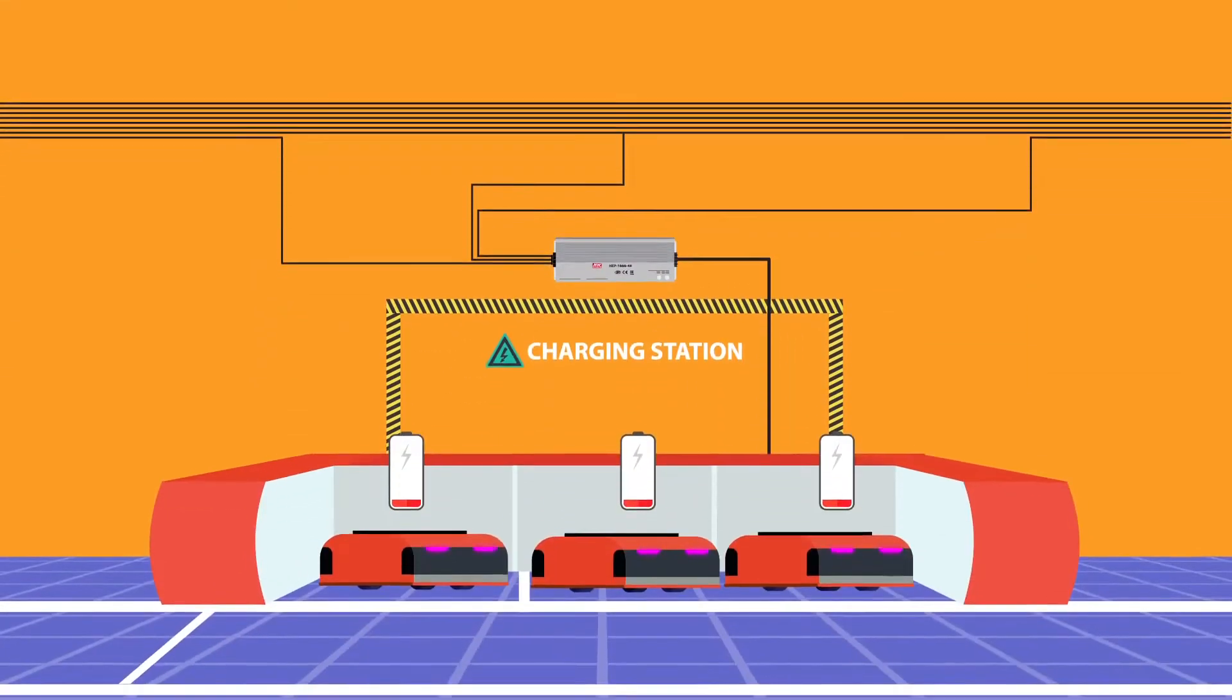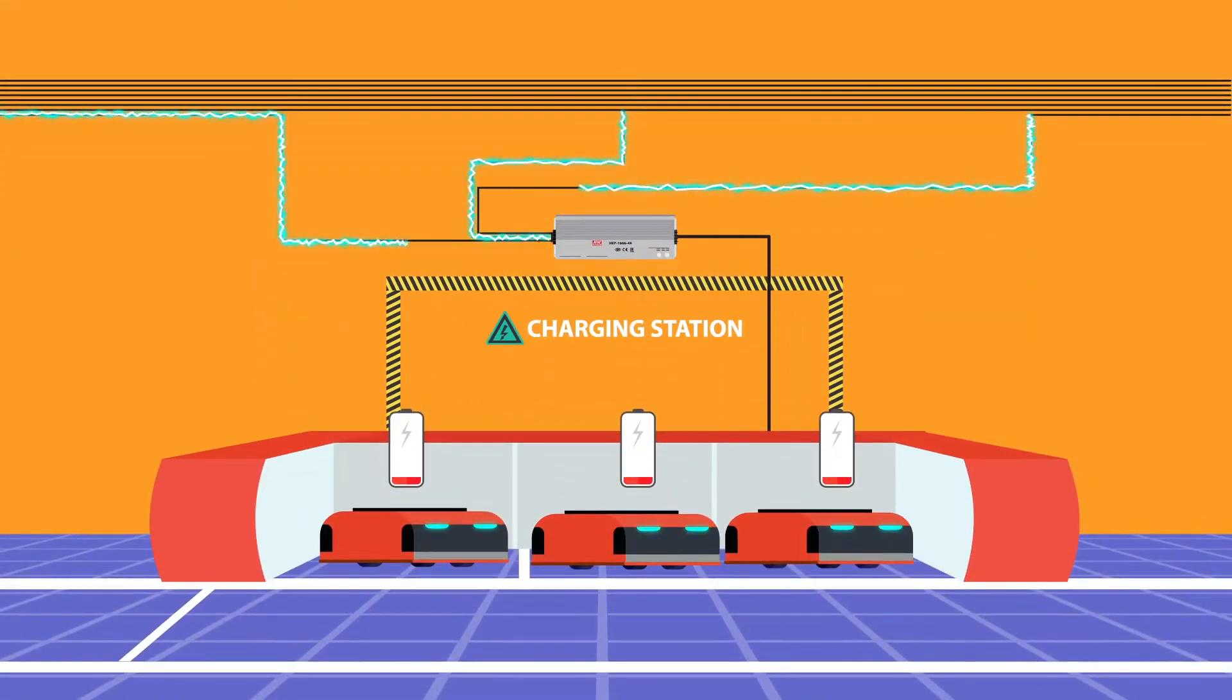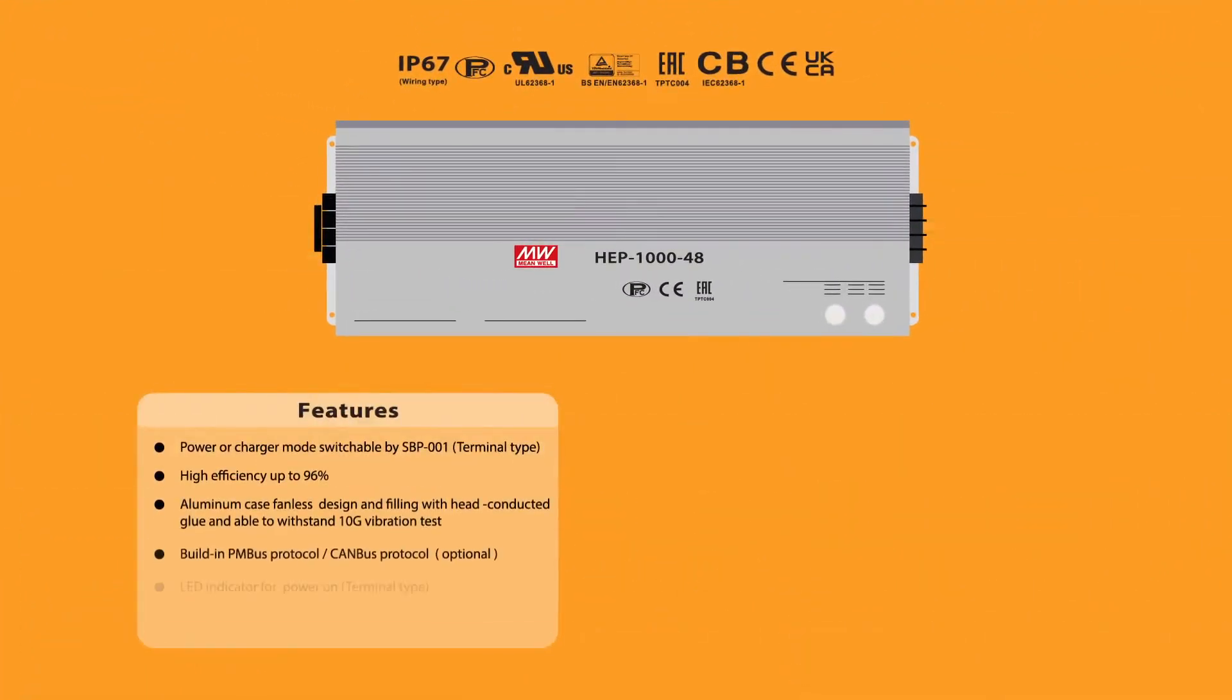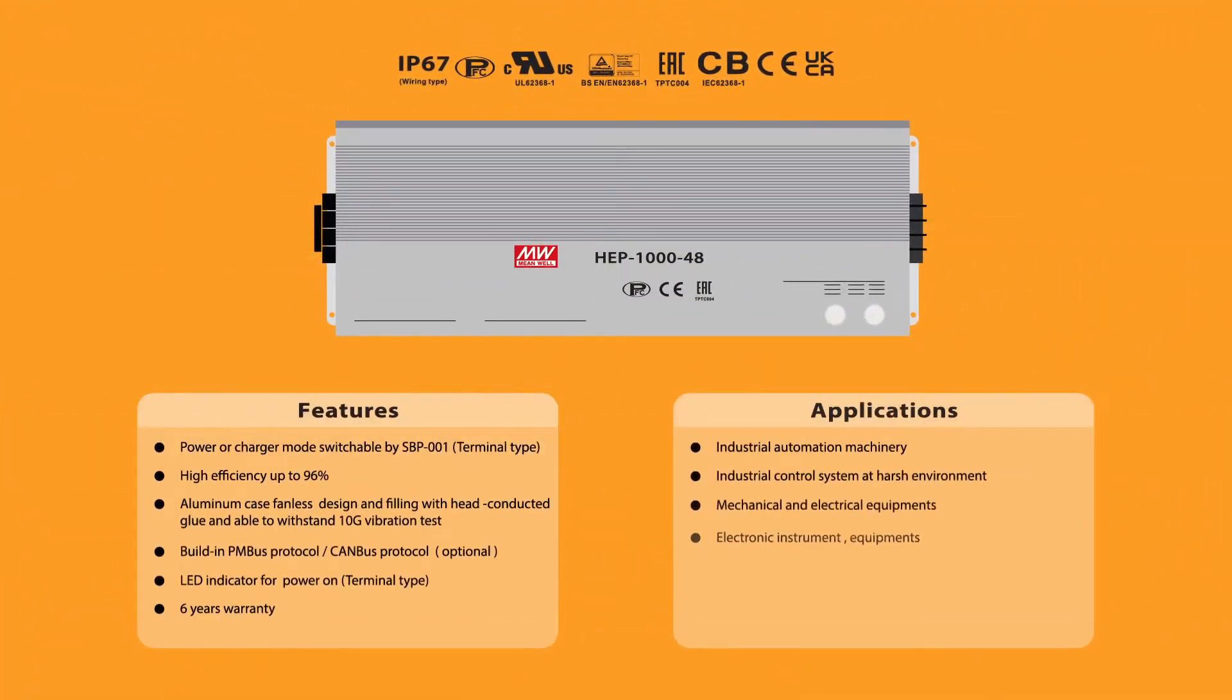Using the HEP switching power supply unit, Paul improved the overall power quality of his warehouse's charging stations and increased the lifespan of his robot fleet. The HEP series offered him a sturdy power supply unit that could withstand anything, be it harsh weather conditions, short circuits, or overloads.